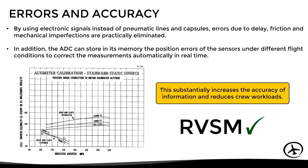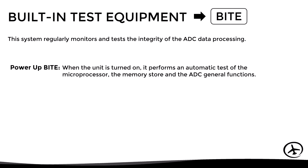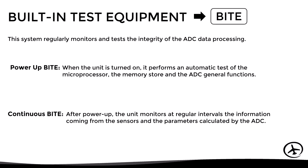The ADC not only increases the accuracy of the information but also its integrity. This is possible thanks to a functionality known as built-in test equipment (BITE). This system regularly monitors and tests the integrity of the ADC data processing, ensuring that instrument indications are correct and accurate at all times. There are two types of processes: the power-up built-in test, which automatically tests the microprocessor, memory, and general functions when the unit is turned on, and the continuous built-in test, which monitors at regular intervals the information from the sensors and the parameters calculated by the ADC.